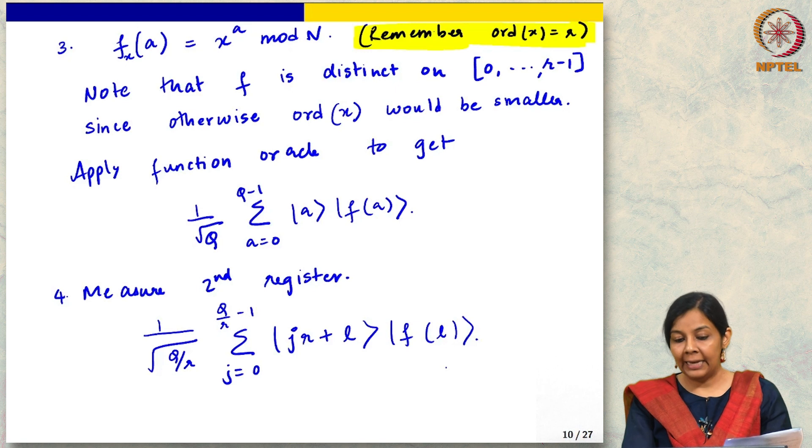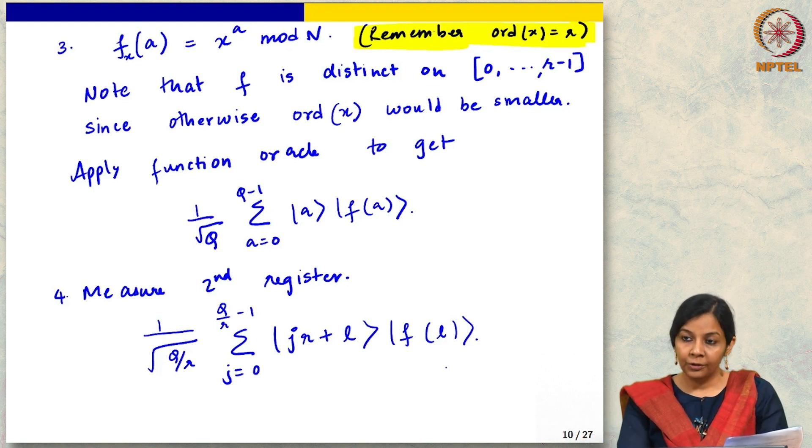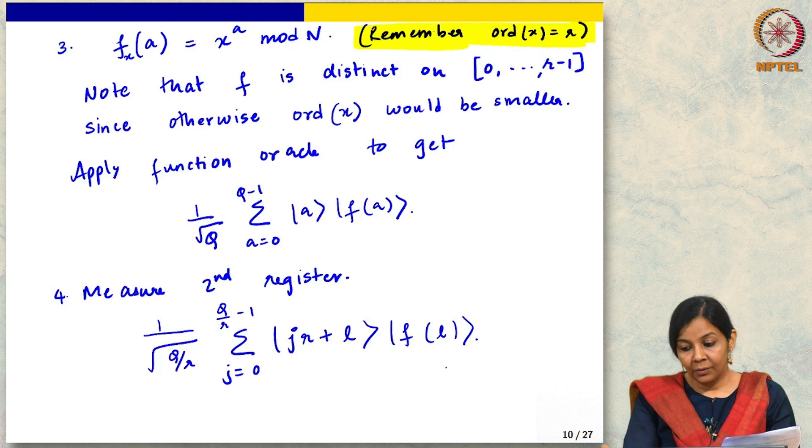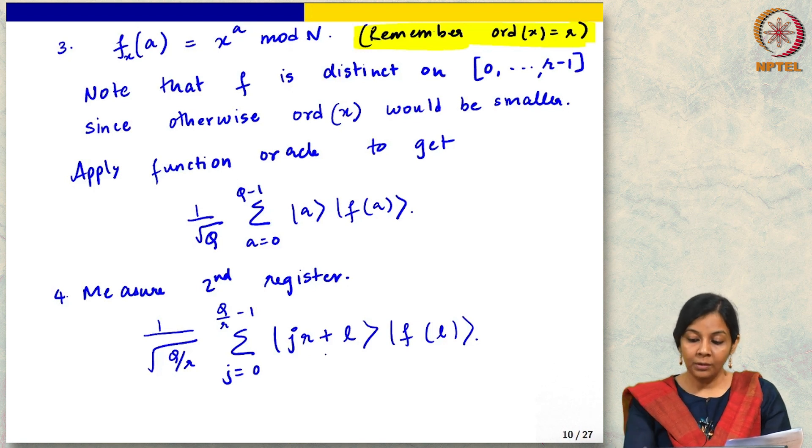I am just using L as some sort of characteristic value which gives us a fixed f of L. Now what we got is this superposition over all these inputs that are consistent with a given f of L value.